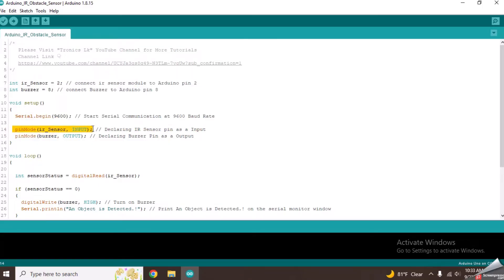From this line, it has declared the IR sensor as an input device for the Arduino. From the next line, it has declared the buzzer as an output device for Arduino.